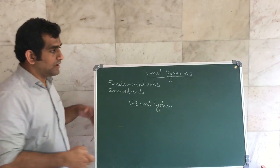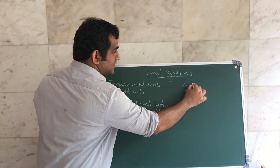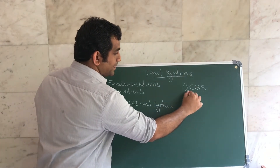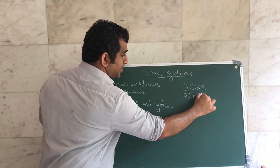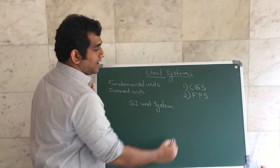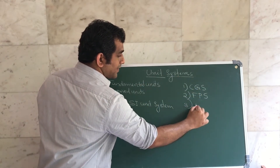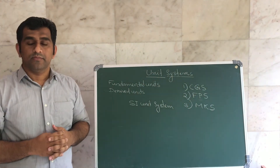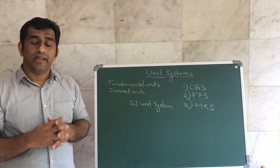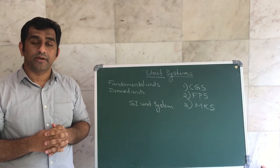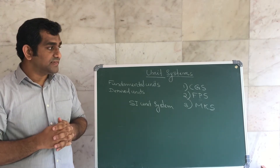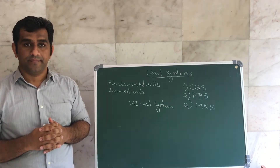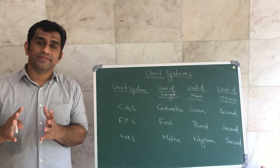Number one: CGS unit system. Number two: FPS system. And number three: MKS system. We are learning these three unit systems — CGS system, FPS system, and MKS system.